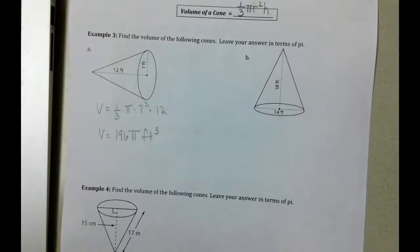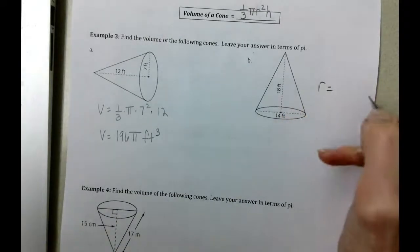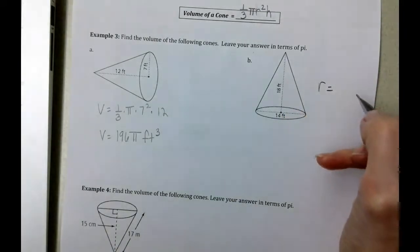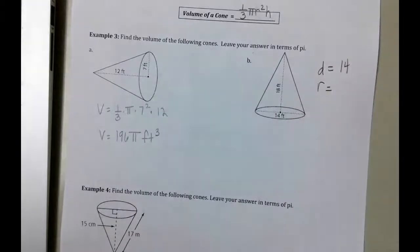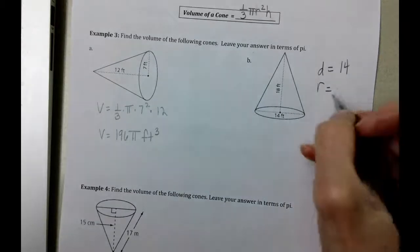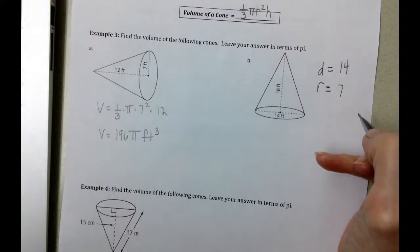When we look at letter B, the thing that we need to be careful with is that we are given not a radius but we're going to need a radius. We're given the diameter is 14, and if the diameter is 14, the radius is half that amount. Then what we want to do is fill in the formula.